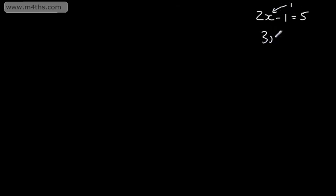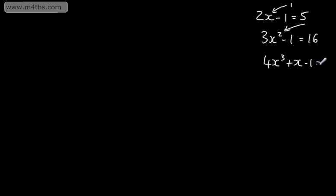If we had, for example, 3x squared minus 1 is equal to 16, this is a quadratic as we have an x squared term. If we had 4x cubed plus x minus 1 equals 0, this is a cubic equation as we have a power of 3. So when we're talking about linear equations, the unknown or variable is just to the first power.